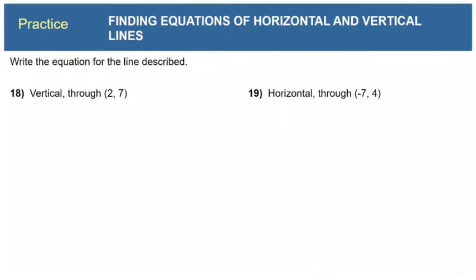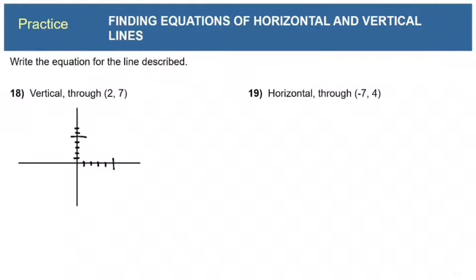Let's give you a chance to write the equation of a couple of lines. The first one says write the equation of a vertical line that goes through (2, 7). I'm going to draw a coordinate system and plot the point (2, 7) and draw a vertical line through it. That helps me see that all these points have the same x value, so I can write the equation of this line as x equals 2.